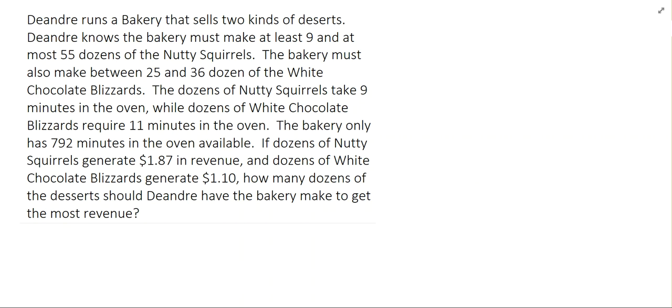All right, let's look at this WOMAP problem. It's a linear programming problem where DeAndre runs a bakery that sells two kinds of desserts. DeAndre knows the bakery must make at least 9 and at most 55 dozens of the nutty squirrels. The bakery must also make between 25 and 36 dozen of the white chocolate blizzards. The dozens of nutty squirrels take 9 minutes in the oven, while dozens of the white chocolate blizzard require 11 minutes in the oven. The bakery only has 792 minutes in the oven available. If dozens of nutty squirrels generate $1.87 in revenue and dozens of white chocolate blizzards generate $1.10 in revenue, how many dozens of desserts should DeAndre have the bakery make to get the most revenue?